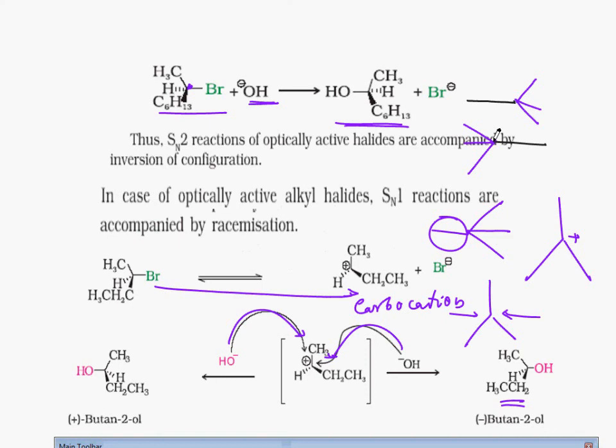So what actually happens is you get a mixture of both the compounds, therefore racemization takes place. Racemization means what? You have a mixture of two optically active compounds, one is positive and another is negative. This is what happens when an optically active compound undergoes SN1 reaction.